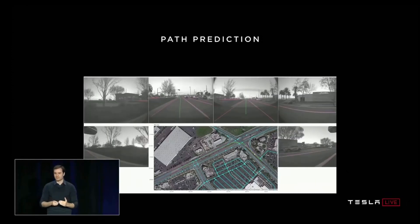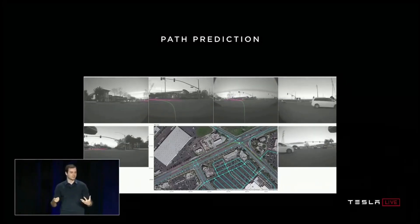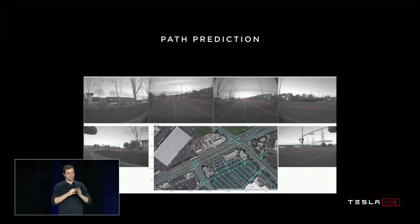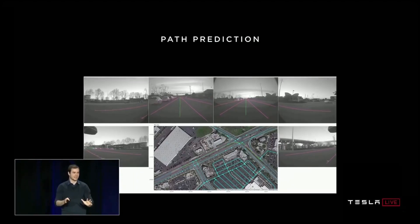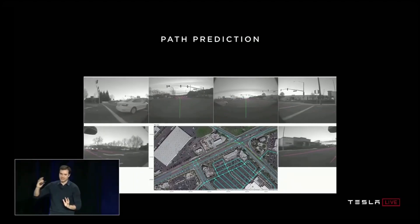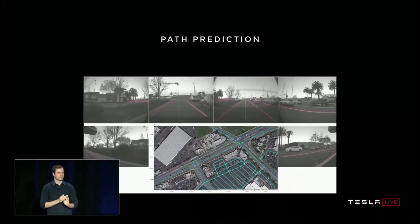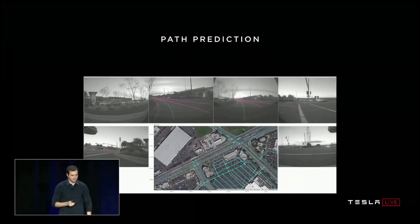What this is typically referred to is imitation learning. We're taking human trajectories from the real world and just trying to imitate how people drive. We can also apply the same data engine to all of this and make it work over time.